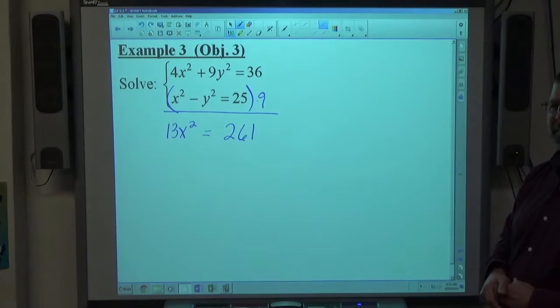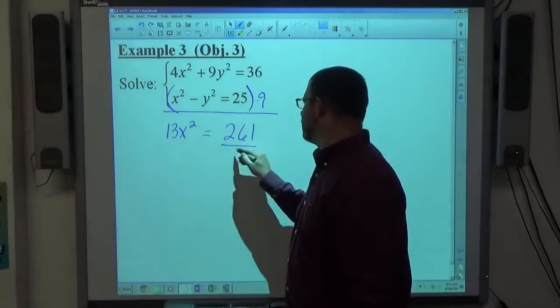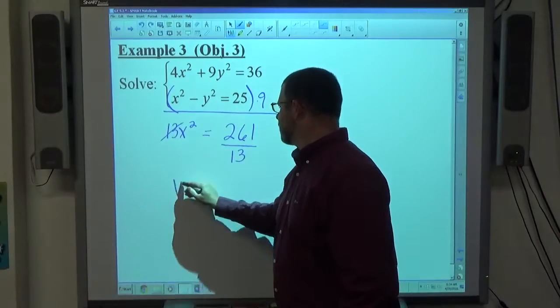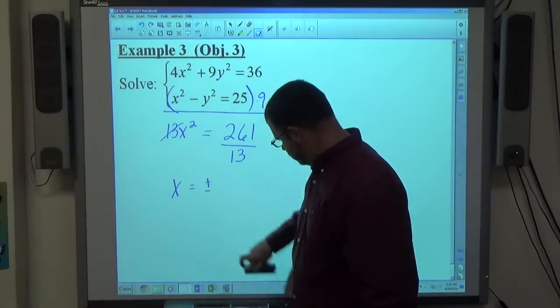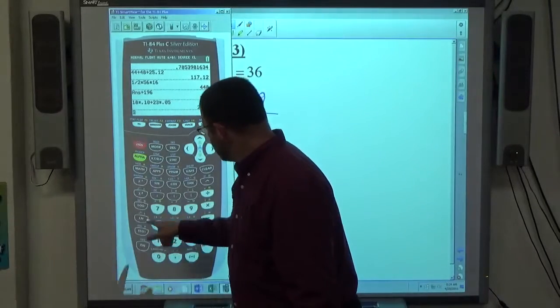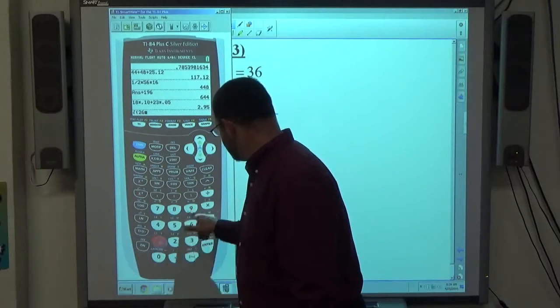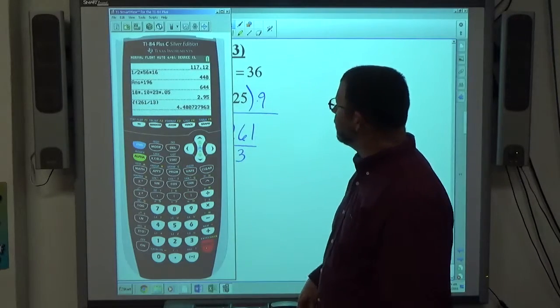Kind of nice if it was 260, wouldn't it? Because we'd divide by 13 evenly. Oh well. So 13x squared equals 261 divided by 13. x squared equals that. So x equals plus or minus the square root of 261 over 13.